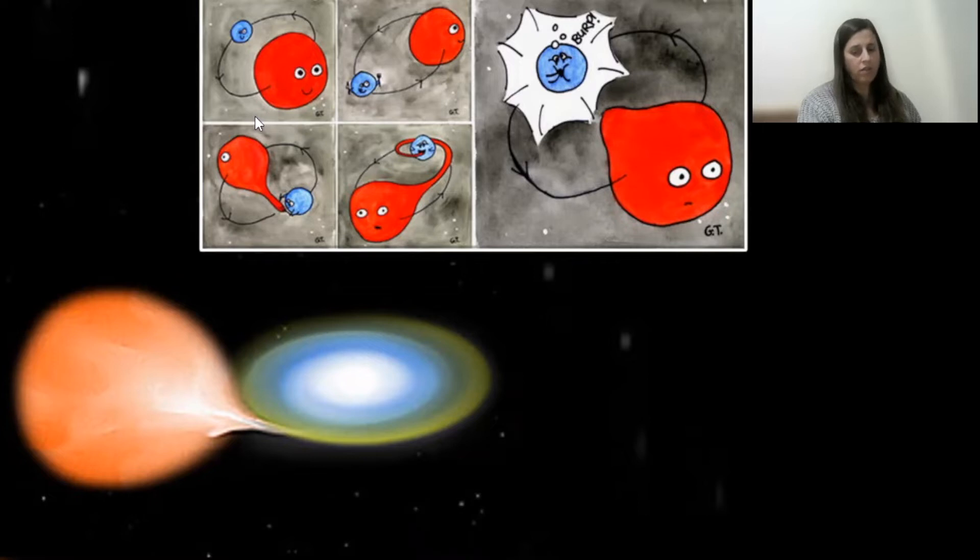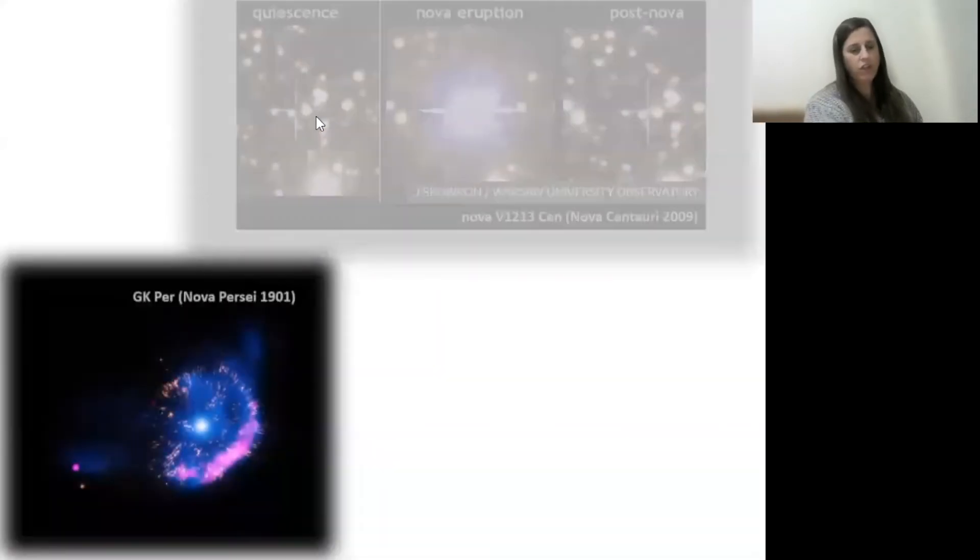The companion is a red, less evolved star. So hydrogen rich matter piles up onto the surface of this degenerate white dwarf, causing the subsurface pressure and temperature to increase until hydrogen burning starts. Since this burning happens under degenerate conditions, the white dwarf doesn't react by expanding, and this results in further heating and triggers a thermonuclear runaway causing a violent ejection of mass.